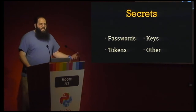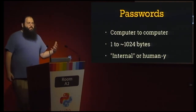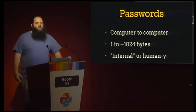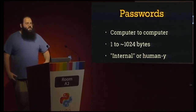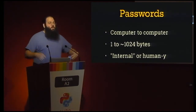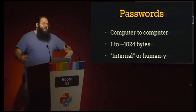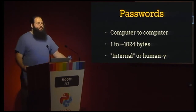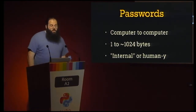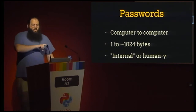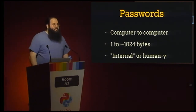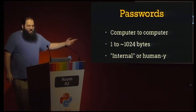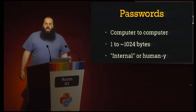Four types of secrets as guiding use cases. First, passwords — we're talking about machine-to-machine authentication for systems originally designed for humans, like logging into Postgres or MySQL. In general, passwords are going to be very small, usually below 1K. Examples include SQL database passwords, HTTP proxy passwords, or Linux login passwords.